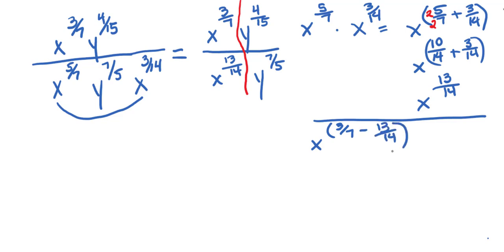So I need a common denominator. 14 will work, so I'm going to need to put a 2 on this numerator and denominator. So I have X to the 6 14ths minus 13 14ths. And that gives me X to the negative 7 14ths. And that will reduce to negative 1 half.